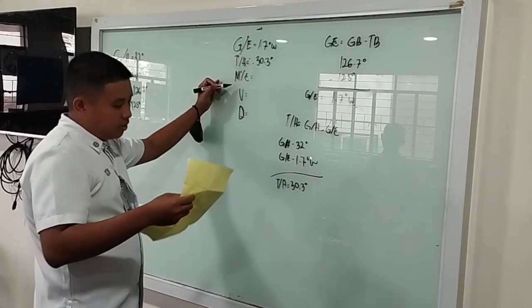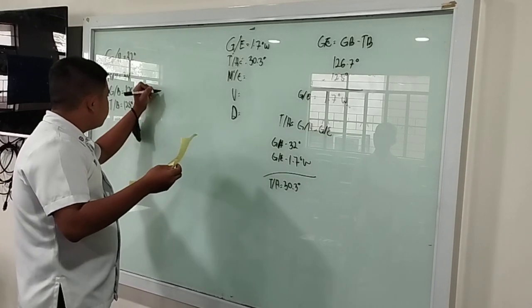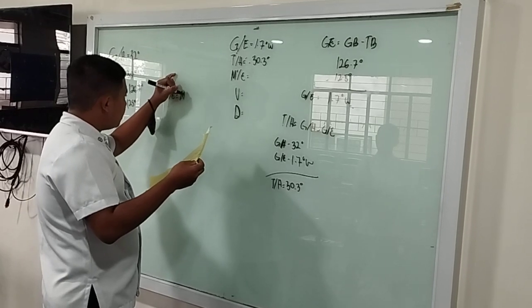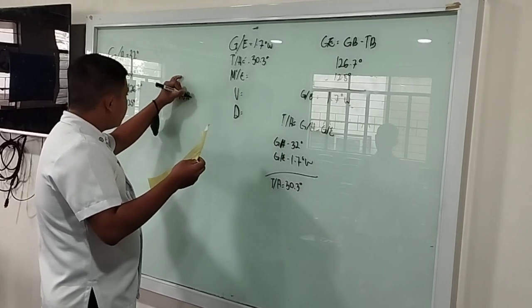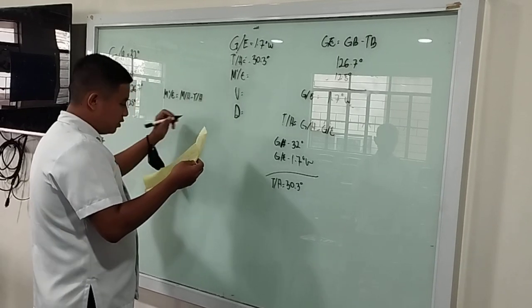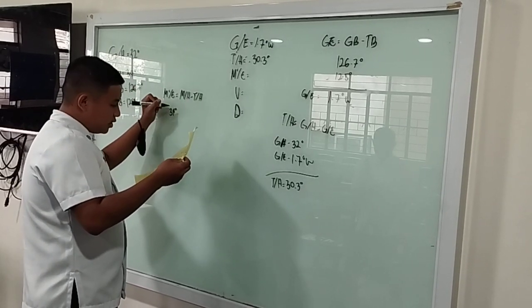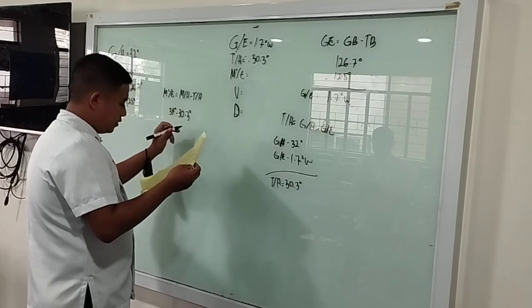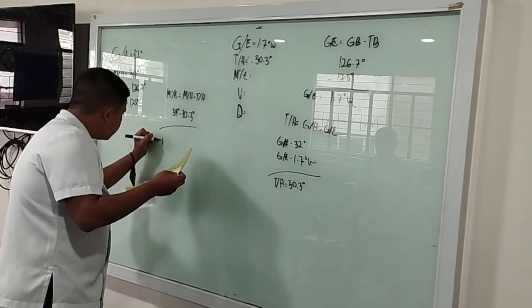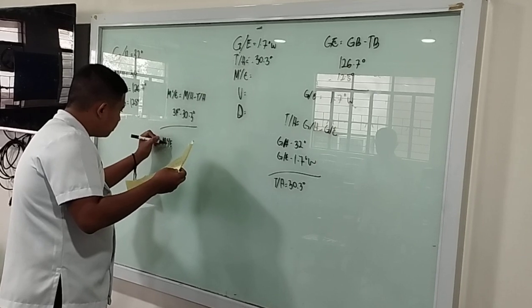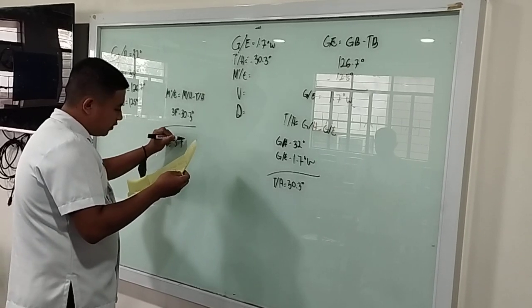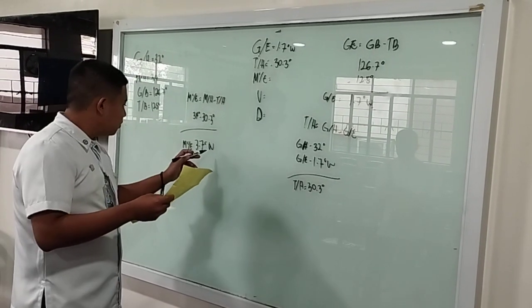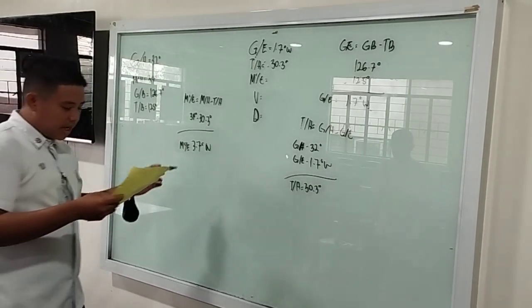Now we need to get our magnetic compass error, and that is why we needed the true heading first. Magnetic heading 34 degrees minus true heading 30.3 degrees equals our magnetic compass error: 3.7 degrees West. The magnetic heading is higher than true heading, so we put the sign West.